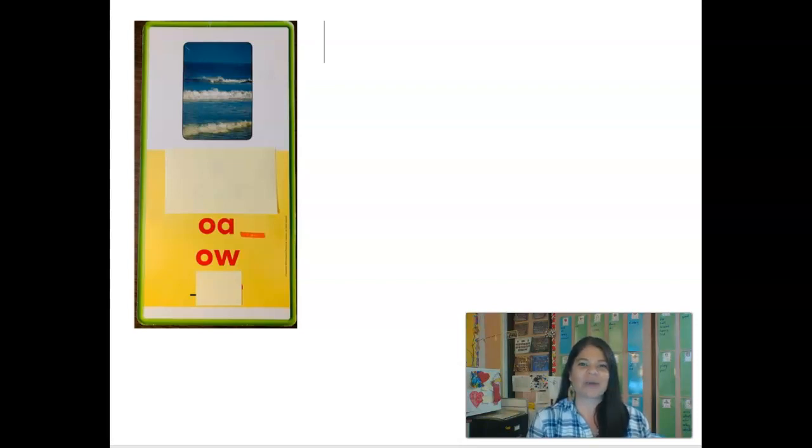The first word that we're going to practice is the word crow. The crow flew over the field. Crow. C-R-O. First sound C. Could be a C. Could be a K. Do you know which one it is? It's a C. C-R-O. That O sound is at the end of a word so it's not going to be OA. It's going to be O-W. Crow.